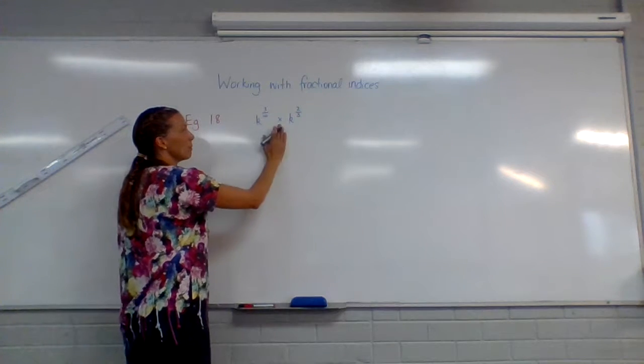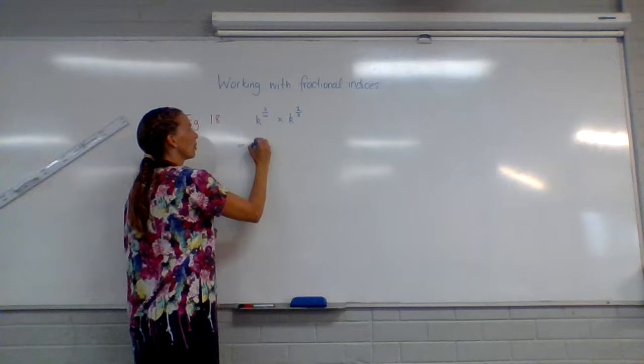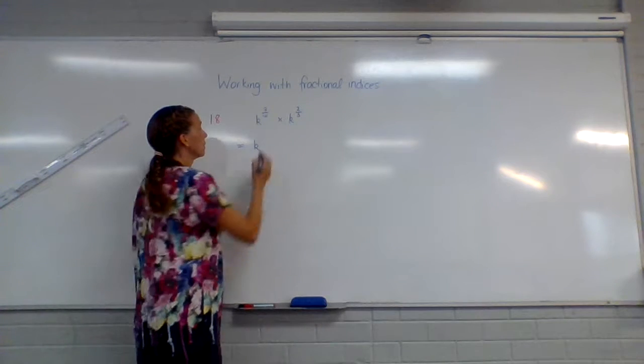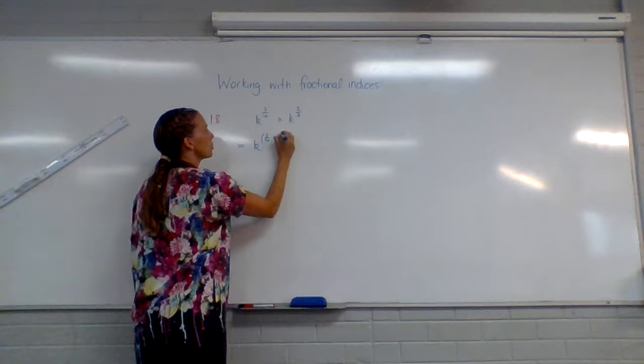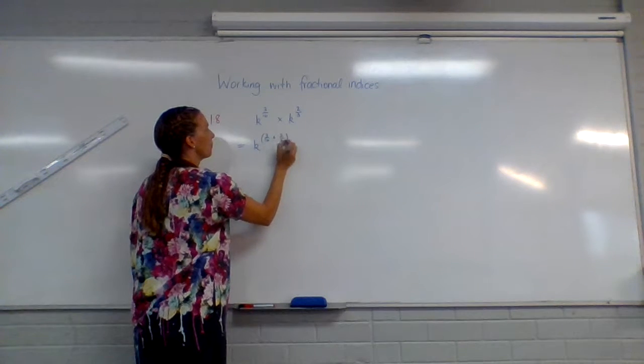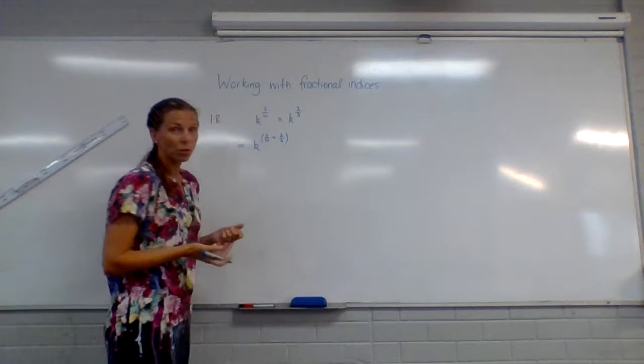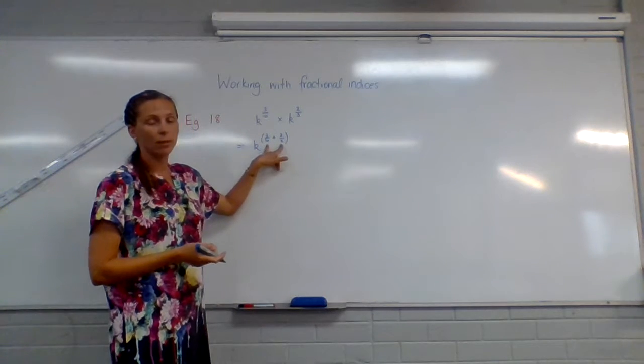So it's the multiplication law, which means I've got k being my base to the 3 tenths plus 2 thirds. Now the difficulty with this one is that they don't have the same denominator.